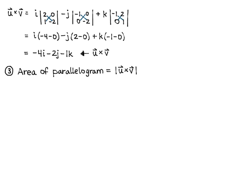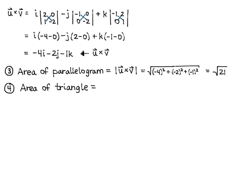The area of the parallelogram is the magnitude of u cross v, which is the square root of (-4)² + (-2)² + (-1)², giving us the square root of 21. The area of the triangle is half of this, so the area of the triangle is √21 / 2.